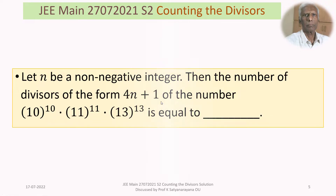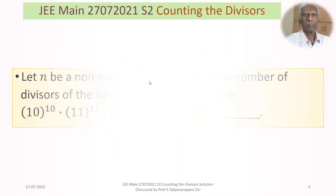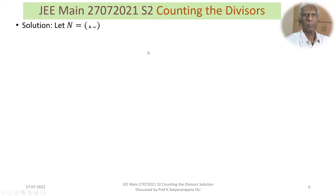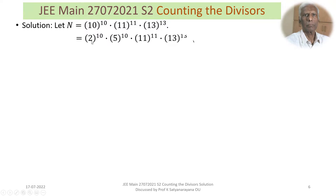We now discuss the solution of the problem in detail. Let us denote the given number by N and write down its prime factorization. 10 is written as 2 × 5, so we get 2^10 × 5^10 × 11^11 × 13^13.